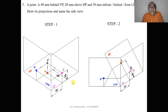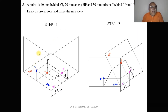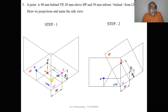The front view condition — that the plane is between the object and the observer — is satisfied only when you look from the left-side view. When you look from the left-side view, the plane is between the object and the observer. If you take the right-side view, the object is between the plane and the observer. Since the front view condition is satisfied only from the left-side view, the point has to be seen only in the left profile plane.